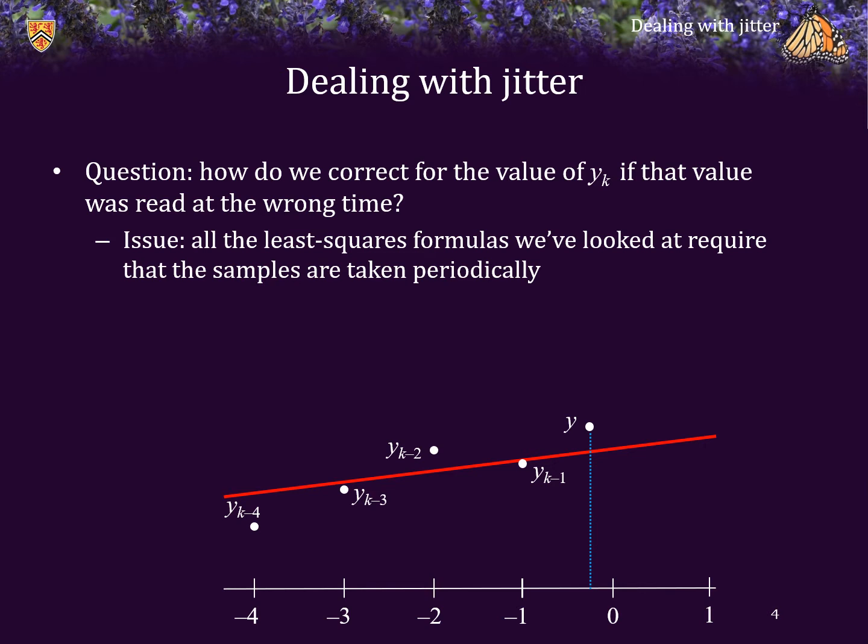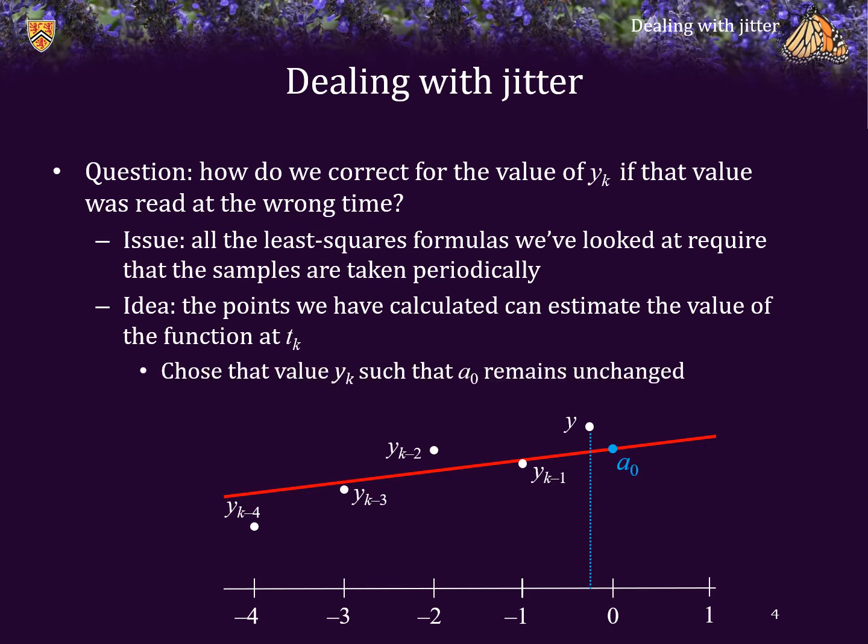And we would rather not have to go back and calculate new formulas for every different set of t values. So what we're going to do is we're going to estimate the value of the signal at time t sub k using a least squares best fitting polynomial. So we are now at this point here, and we will now choose y sub k so that that approximation remains the same if we discard y, and now use the value y sub k.